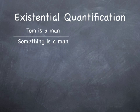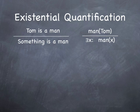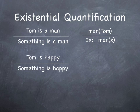Let's take this inference: Tom is a man, therefore something is a man. We represent Tom as a man like this: man parenthesis Tom. And then to apply our rule, we just take the proper name Tom, replace it with an x, and then in front of it we put there exists x such that man x. Simple as that.